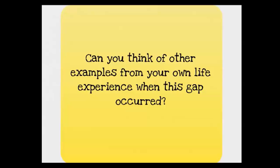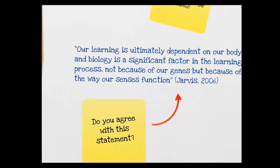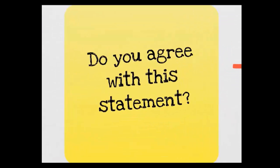The learner is more than just a cognitive machine because learning begins with our five human senses. As Jarvis states, our learning is ultimately dependent on our body, and biology is a significant factor in the learning process — not because of our genes, but because of the way our senses function. Do you agree with that statement?